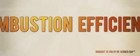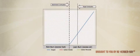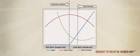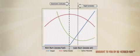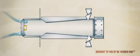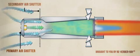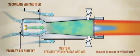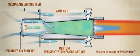Combustion efficiency is a measure of how completely an appliance converts the supplied fuel into heat energy. 100% combustion efficiency is achieved when the exact amount of oxygen required to burn a specific amount of fuel is supplied to the reaction.